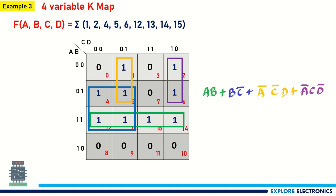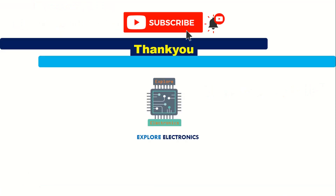Don't forget the previous example — if you get ones at the corners, you can group those four corner cells as a single four-cell group. Thank you.